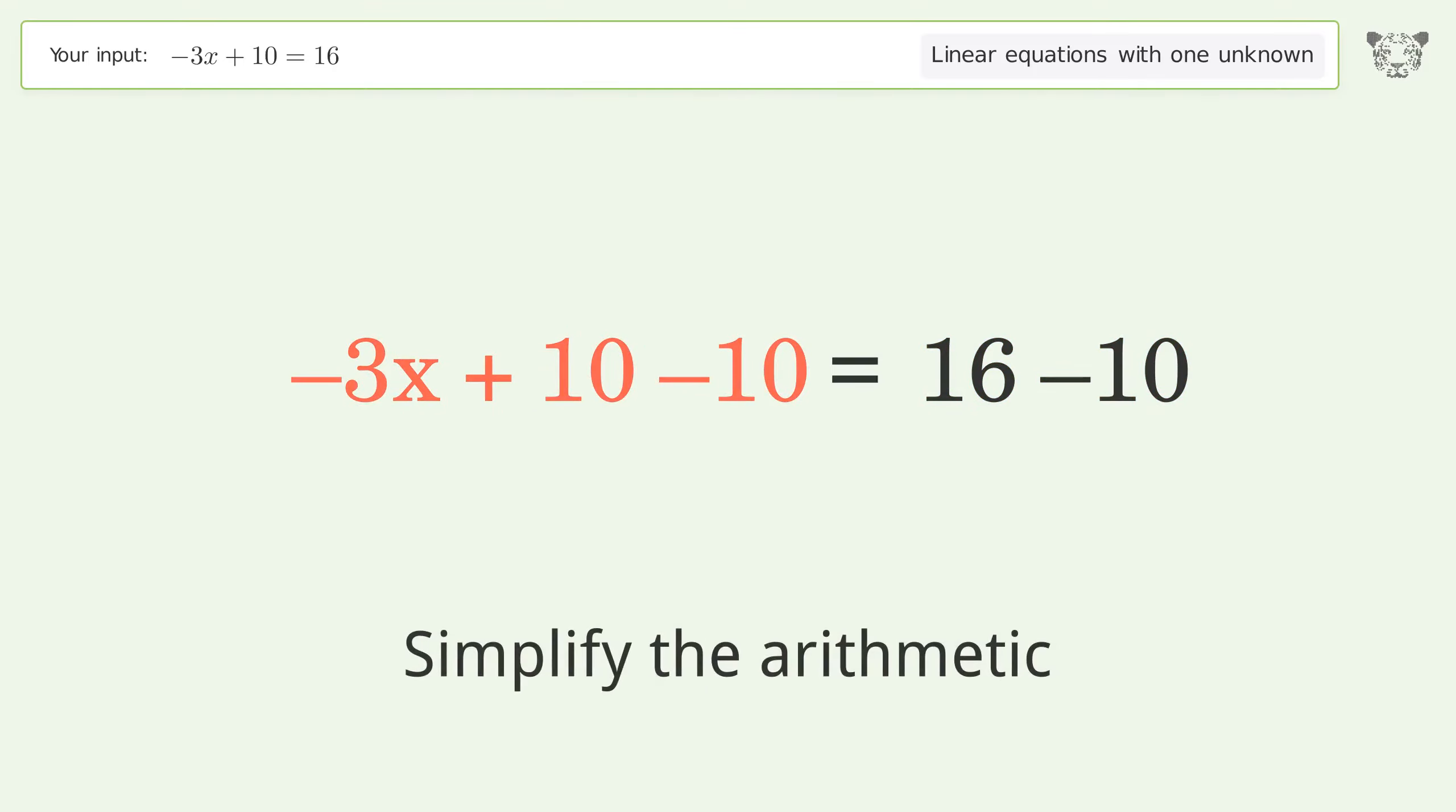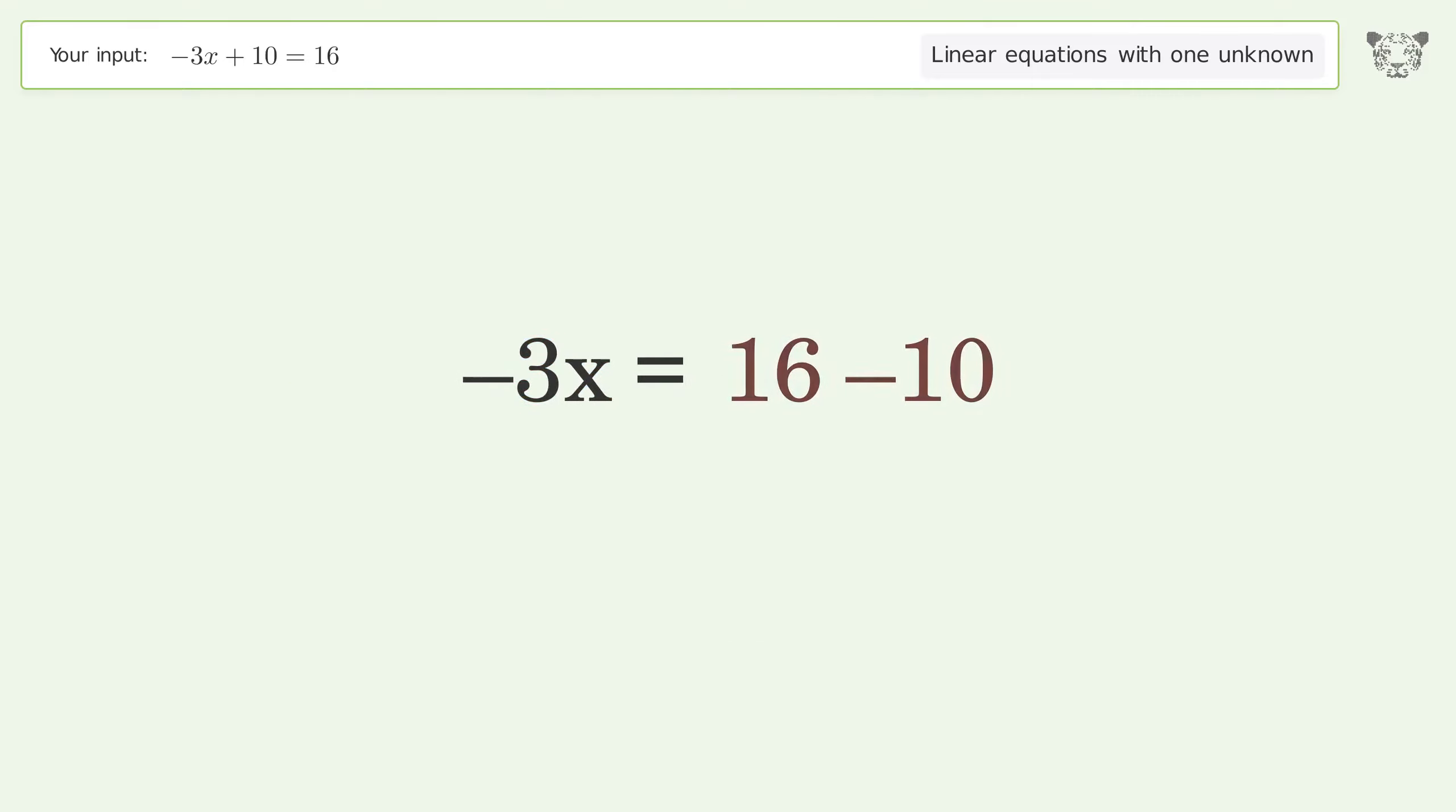Simplify the arithmetic. Isolate the x. Divide both sides by negative 3.